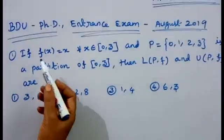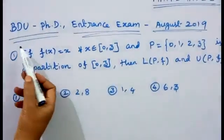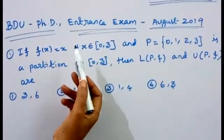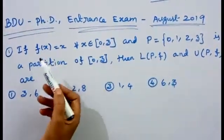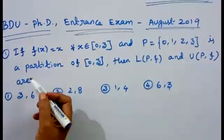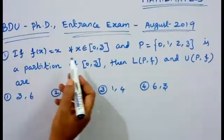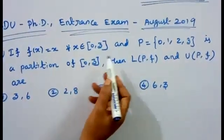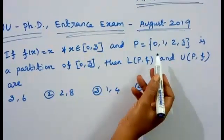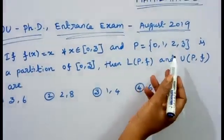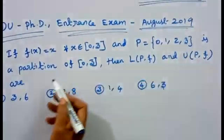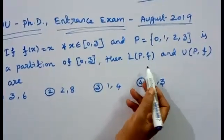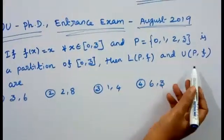Good morning students. We are going to talk about this video about Vardas University PhD Entrance Exam — the previous year questions. We will discuss the first question: if f(x) = x for all x belonging to the closed interval [0,3], and P = {0,1,2,3} is a partition of the closed interval [0,3], then L(P,f) and U(P,f) are?